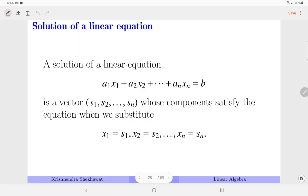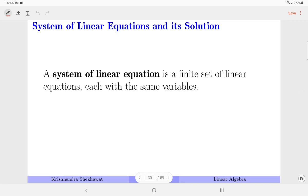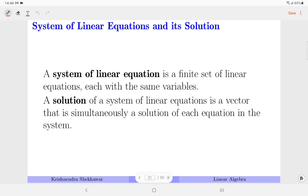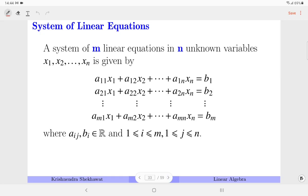The solution of a linear equation is given by an n-tuple or ordered n-tuple, which means the first value gives you the value of the first variable x1, then x2 and so on. A system of linear equations represents a finite set of linear equations, each with the same variables. The solution of the system is a solution which is satisfying all the equations simultaneously. System of linear equations in standard form is represented as follows: m equations and n unknowns where aij and bi are real numbers.